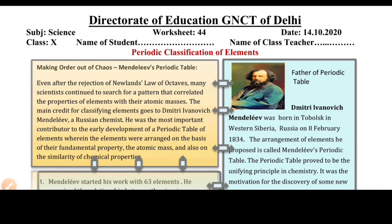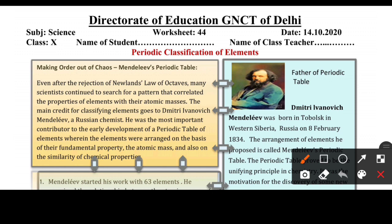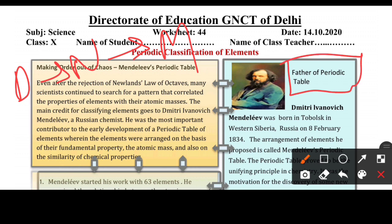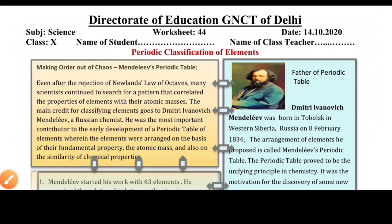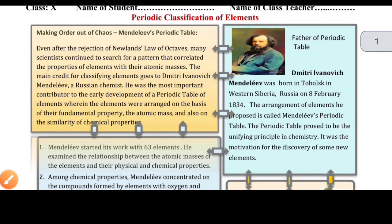I have told you in the previous worksheet that when Döbereiner failed, Newland gave his law. And when Newland failed, after that we called our Mendeleev. Mendeleev is called the Father of the Periodic Table. His full name was Dmitri Ivanovich Mendeleev — a very tough name.